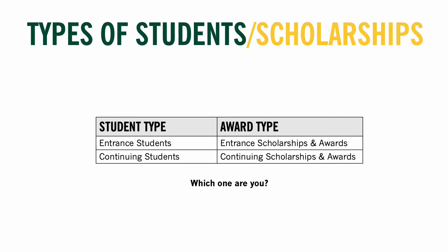Before we begin, I just want to note that at the U of R we have two categories of students that correspond with the type of scholarships they can apply for. The first are entrance students who apply for entrance scholarships, awards, and bursaries. The second type are continuing students who apply for continuing scholarships, awards, and bursaries. As students entering the U of R, you will be applying for entrance awards.